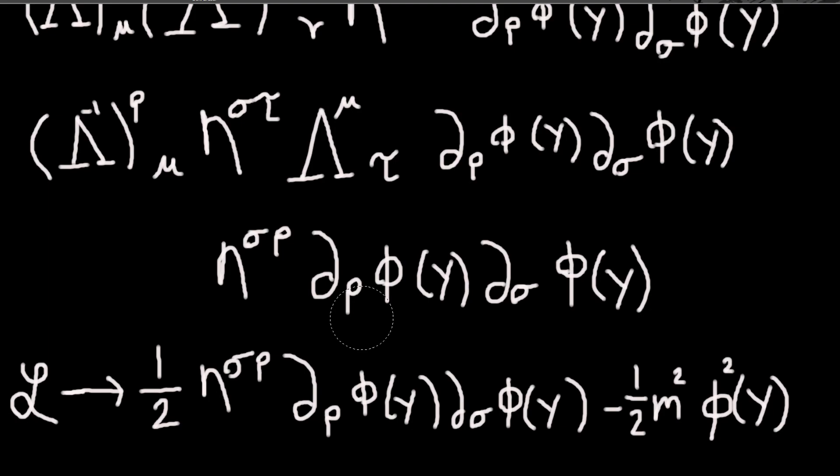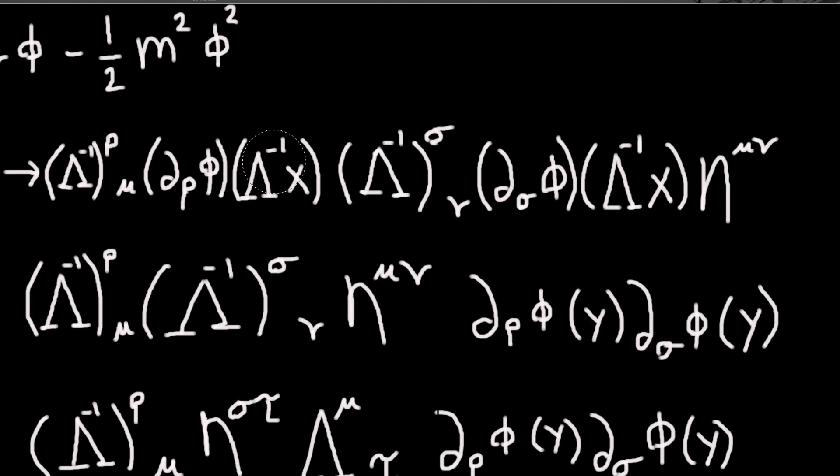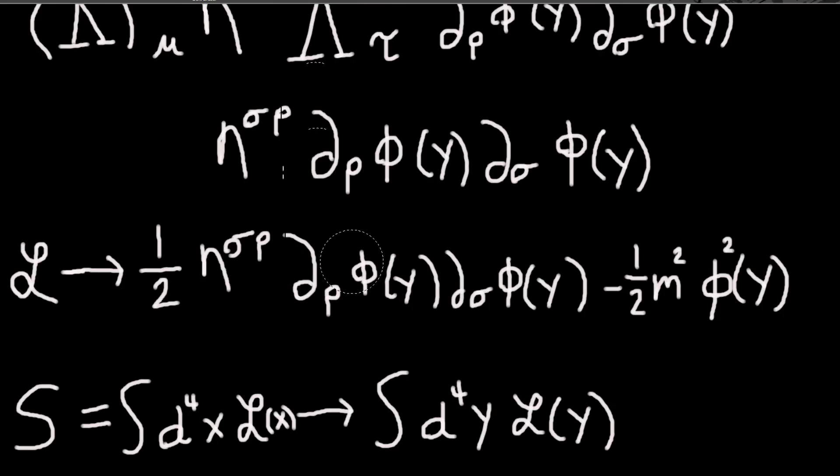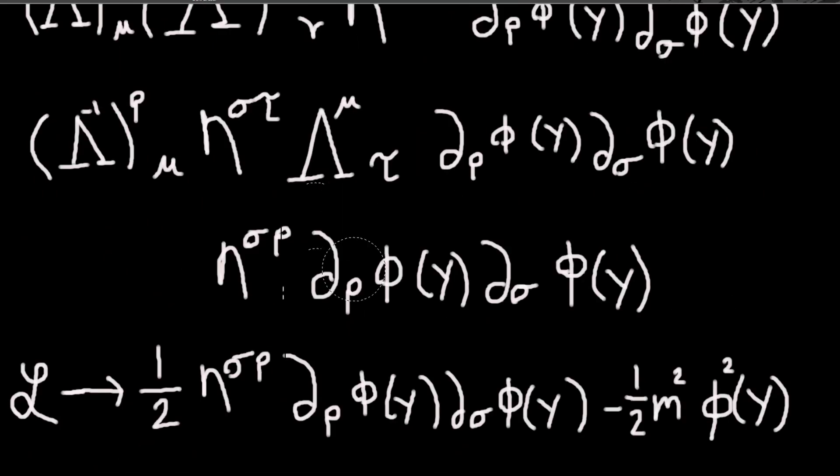And that means the equations of motion that you get from this Lagrangian will just be the same as before, only evaluated at the point y instead of x. And that is what David Tong defines as a Lorentz invariant theory. So if you end up basically with a Lagrangian that looks the same as before, only evaluated at this point instead of x, then it's Lorentz invariant.